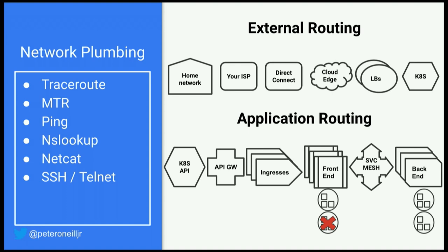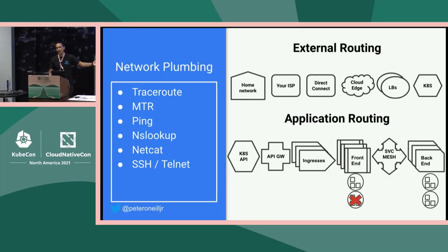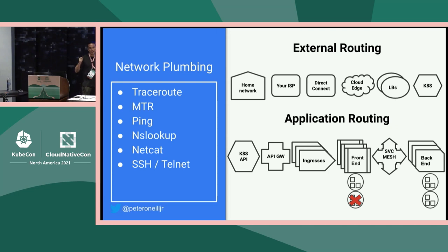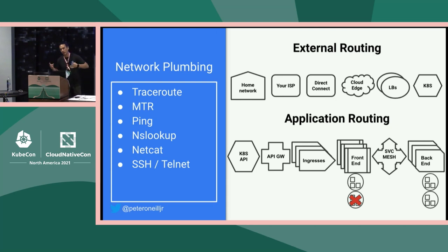These are the tools of the trade: traceroute, MTR, ping, nslookup, netcat, and SSH. These help you identify where along the path things are not working. You're seeing how to connect to things, checking your DNS. And at the very end you have SSH — you want to get as close to the problem as possible. Once you're there, SSH to that box and you can probably fix it: open up the ports, restart some host-level daemon. But all this network plumbing doesn't work inside application routing. All this stuff works on the top half, but now that we've handed off to a Kubernetes cluster with all this application routing — how do we do this?